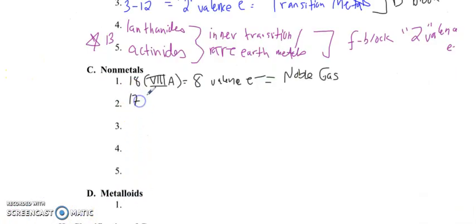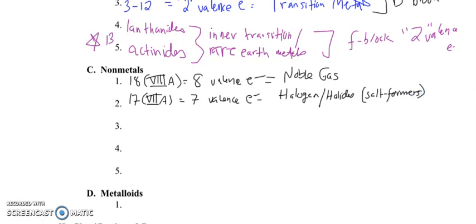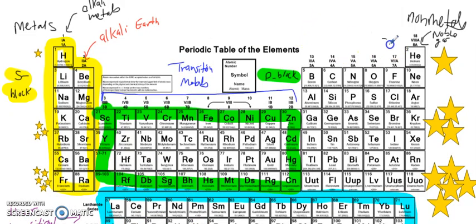Then we're going to go to our next column. This is column 17, used to be called 7A. Back in the day, we call it 7A. And you know why? Because it has seven valence electrons. These are called the halogens. You also might occasionally hear them referred to as the halides. If you're talking to a really, really old school chemist, sometimes they're even called the salt formers. And these are all pretty reactive. Let's label those on the periodic table. So right here, I'm just going to simplify and only call these the halogens.